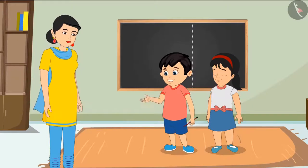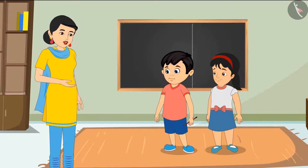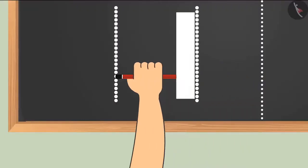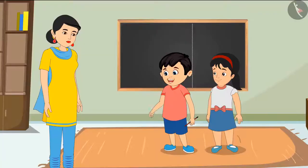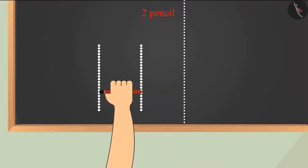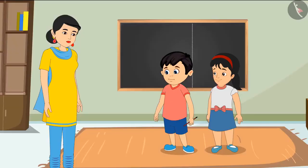Mother tells Chotu he is doing it wrong — while measuring, the entire length must be covered and no part should be missed. He was leaving spaces between pencil placements. Chotu corrects himself: one, two, three, four pencils — his space is four pencils long.